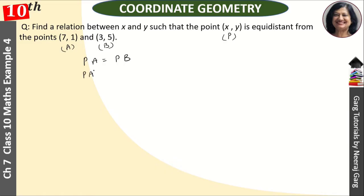When PA and PB are equal, it means PA² is equal to PB² also. We use the distance formula: square root of (x₂ - x₁)² plus (y₂ - y₁)².